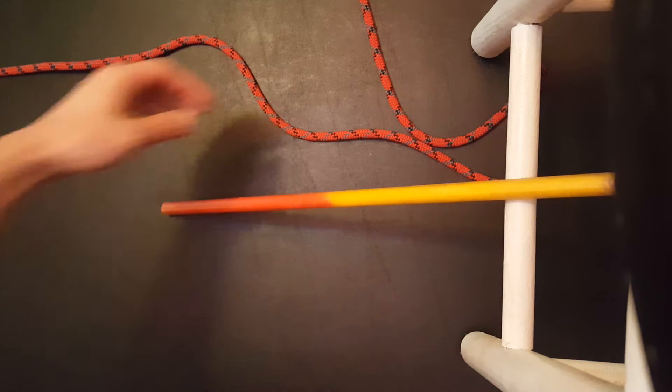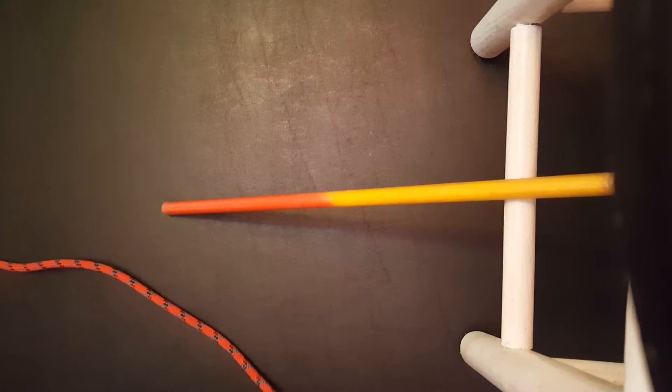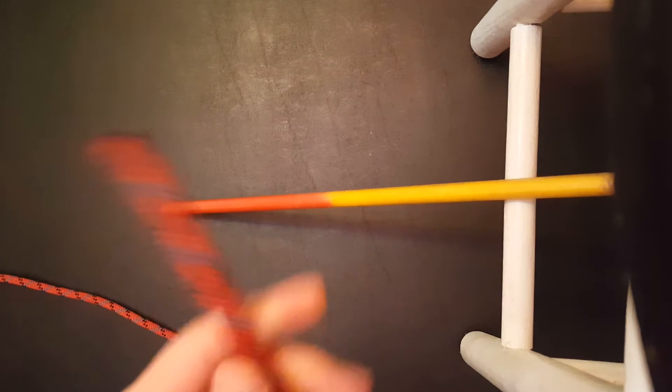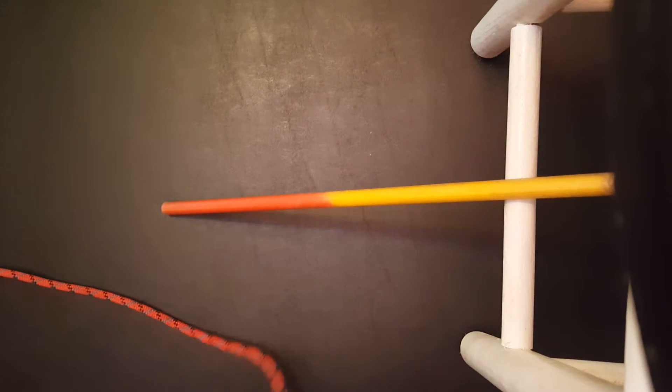All right, let's take a look at a clove hitch. We're using this very colorful stick for demonstration purposes. There's two different ways you can tie a clove hitch that I know of. We'll talk about the working end version, which is the end of the rope, and then we'll talk about the looped version.